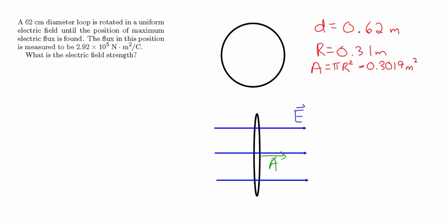We're told that the flux in this position is 2.92 times 10 to the fifth Newton meter squared per coulomb. So the electric flux equals the electric field times the area of the circle, since E is parallel to A — meaning E dot A becomes E times A.